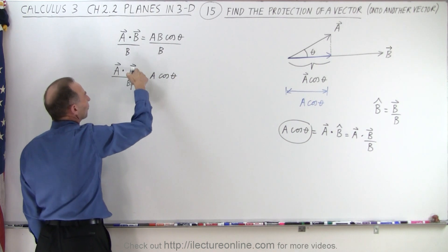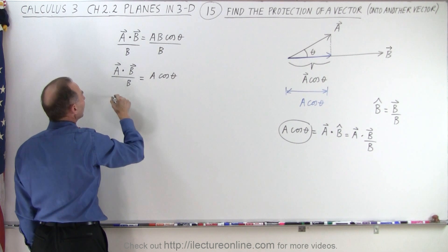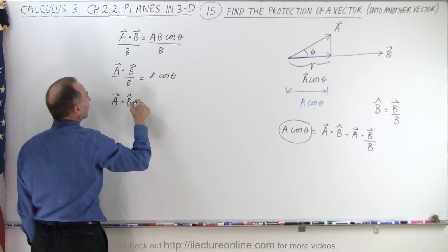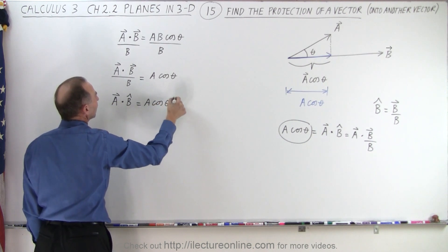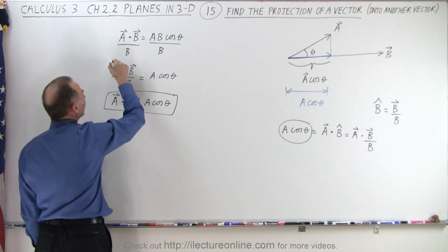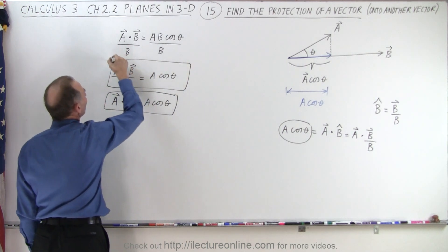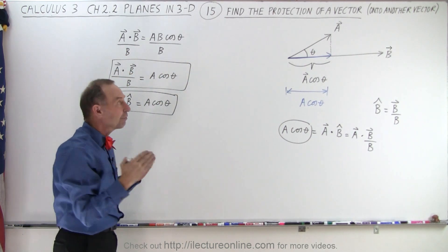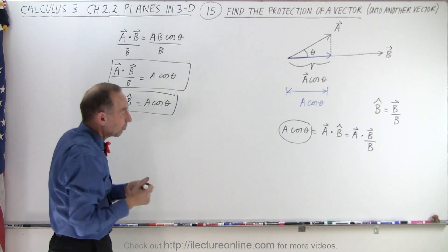And then you realize that the vector B divided by the magnitude of B can also be written as A dot the unit vector B equals A times the cosine of theta. So notice that either in this format or in this format,